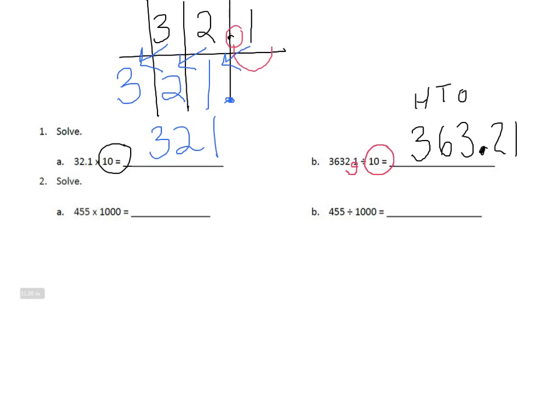Now let's take a look at 2a and 2b. You may notice that there isn't a decimal in either of those numbers, but a good mathematician knows the decimal is always to the right of the last digit in the number. Let's take a look at 2a. 455 times 1,000. If we envision 455 in a place value chart, the 4 is in the hundreds place, the 5 is in the tens place, and the second 5 is in the ones place. We're going to use the same method as before.